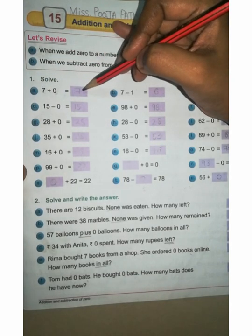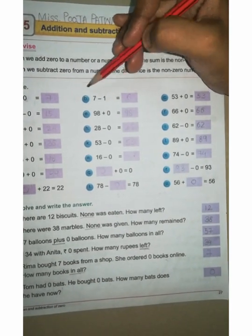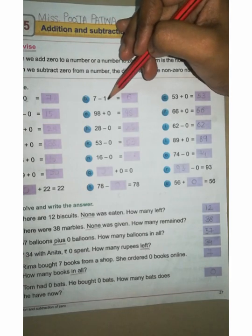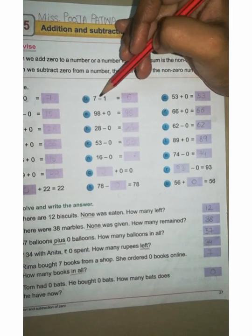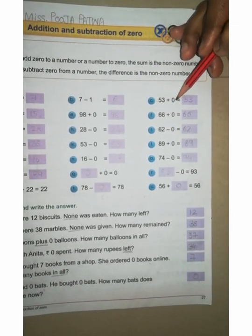B: 7 minus 1 equal to dash. Now take a seven finger and remove one finger, minus one given. Now remove one finger, how much left? Six, right here six. Now see, 53 plus 0 equal to dash. Same here, zero there is no value, as it is you can write 53.